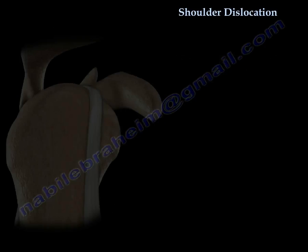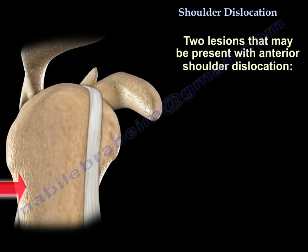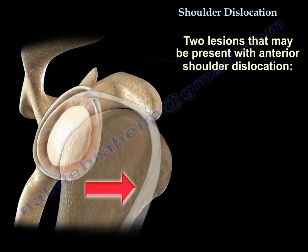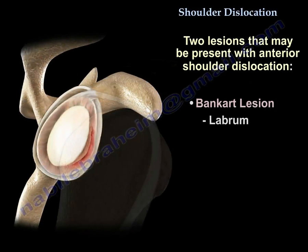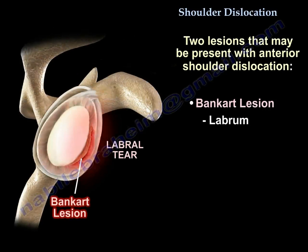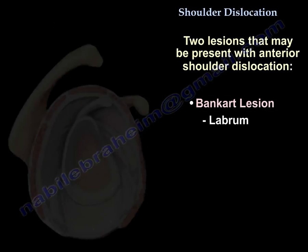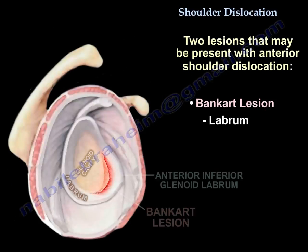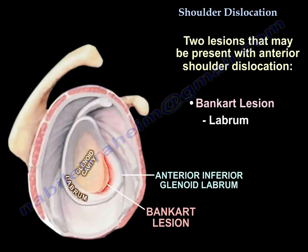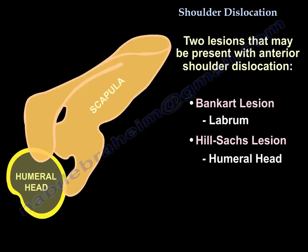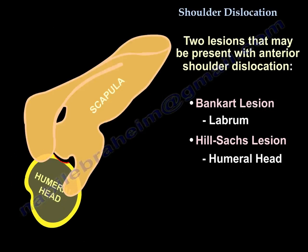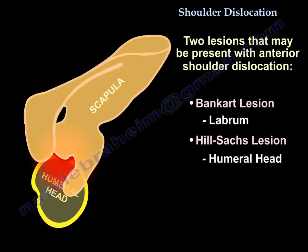There are two lesions that can occur: one is the Bankart lesion of the labrum, and the other is the Hill-Sachs lesion of the humeral head.